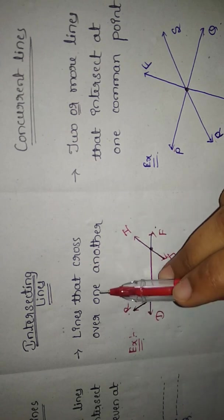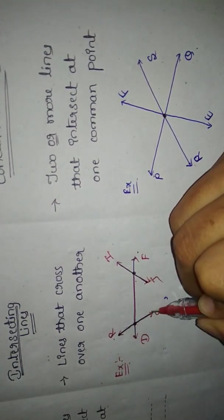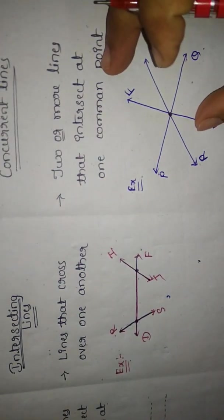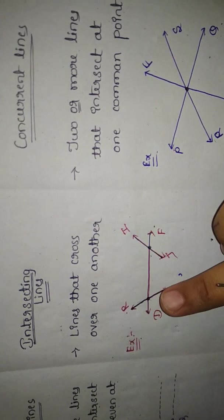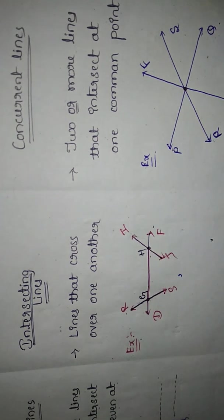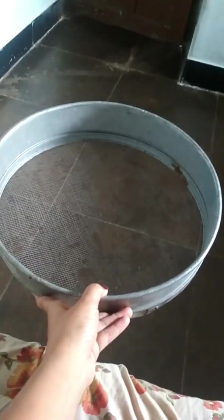What is the difference between intersecting and concurrent lines? In intersecting lines, lines cross over one another but may have different common points with different pairs of lines. For example, for RS and DF the common point is G, and for IJ and DF the common point is H. But in concurrent lines, many lines crossing over one another have only one common point — for example, point O for all three lines. A real-life example is a sieving pan, where thin lines cross one another.